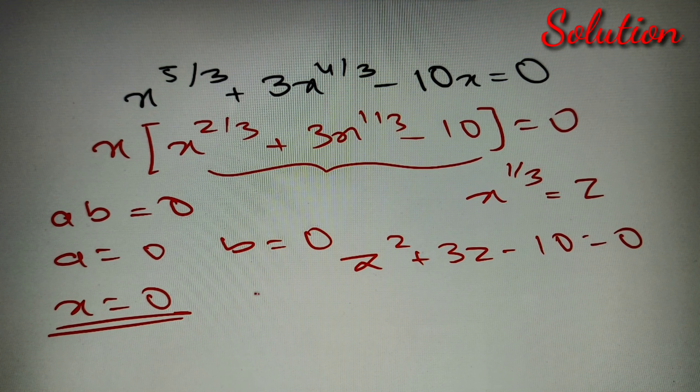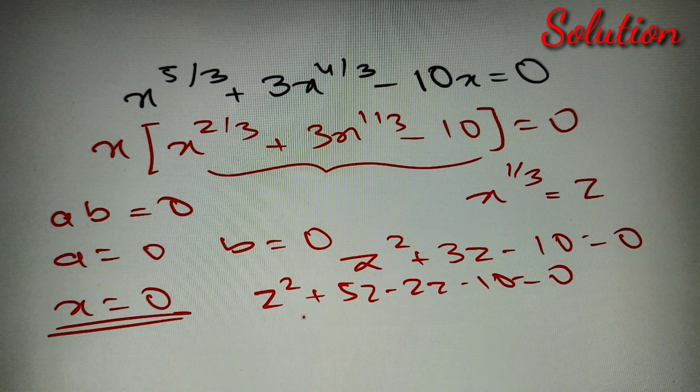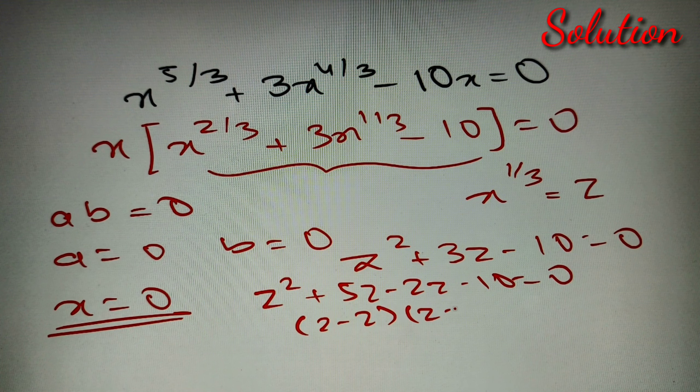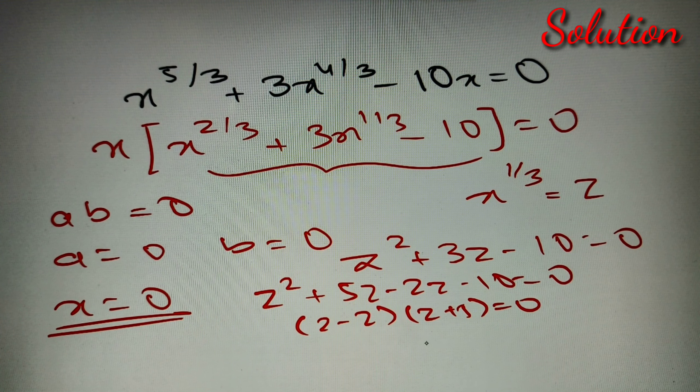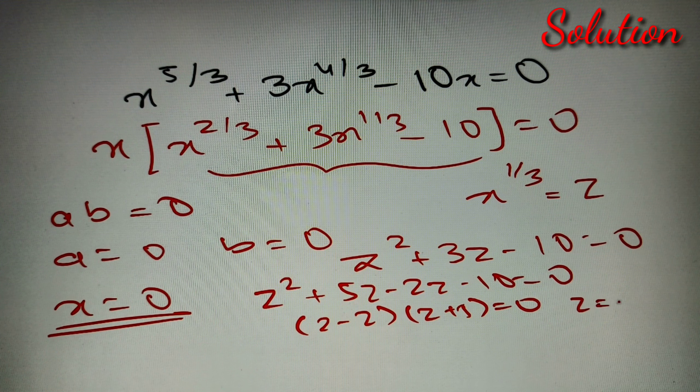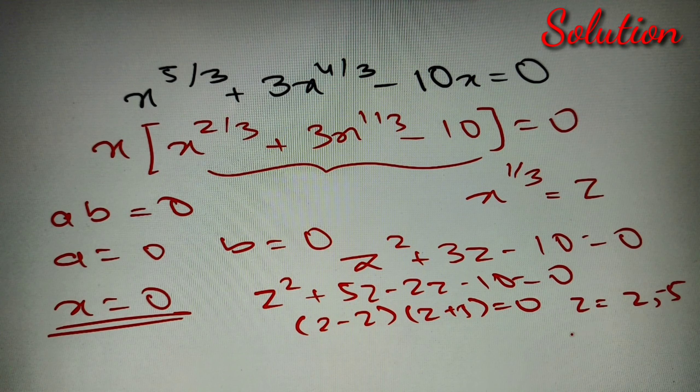So it can be factored as z² + 5z - 2z - 10 = 0, and after factoring we'll get (z - 2)(z + 5) = 0, and the two values of z are +2 and -5.